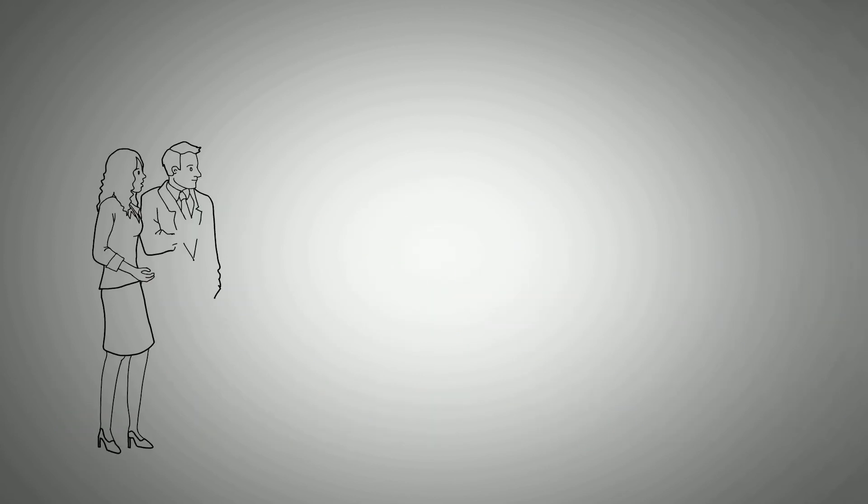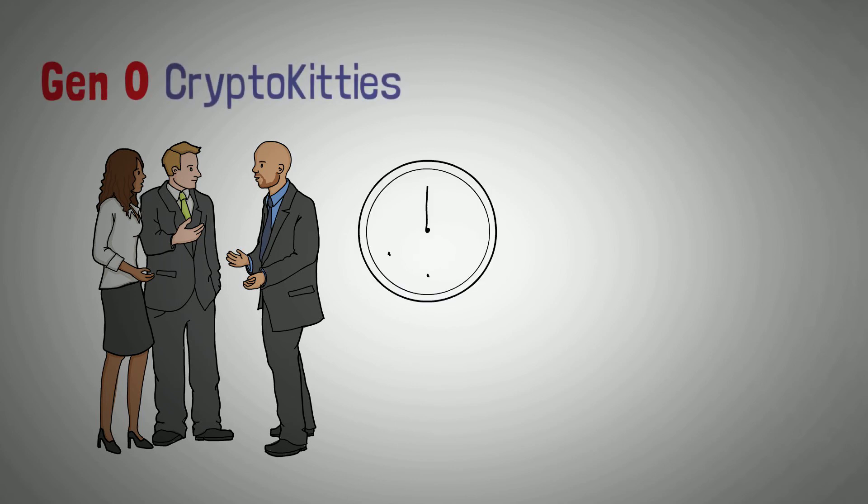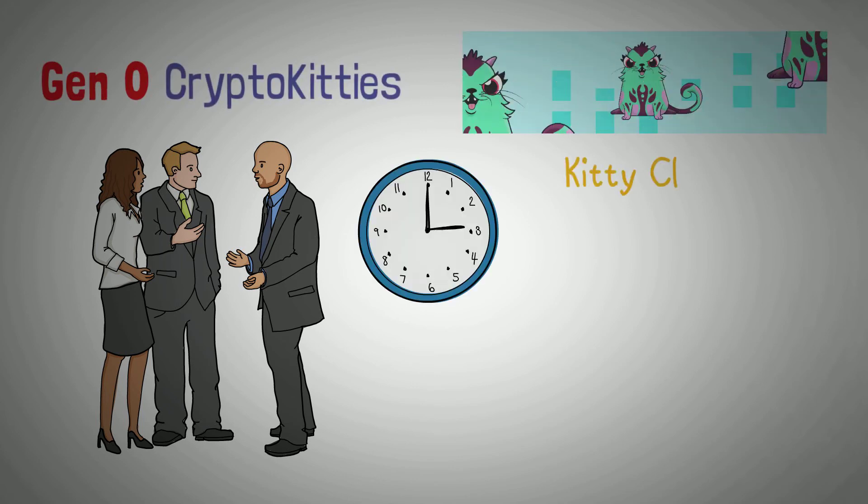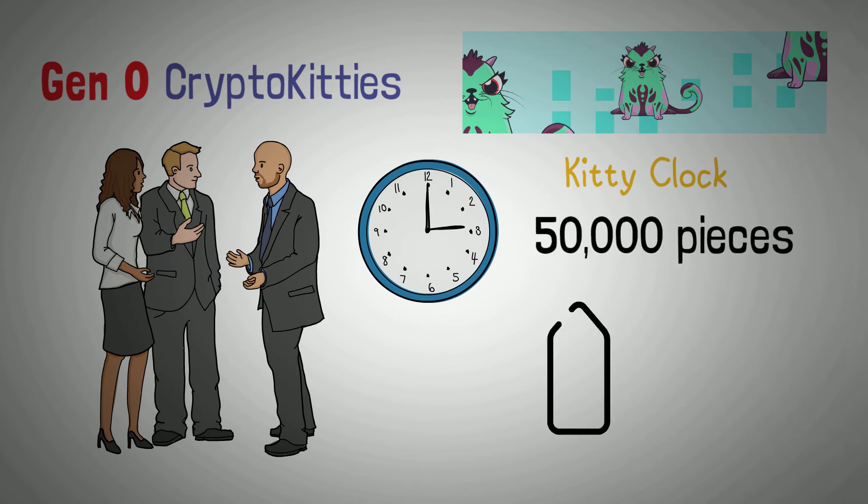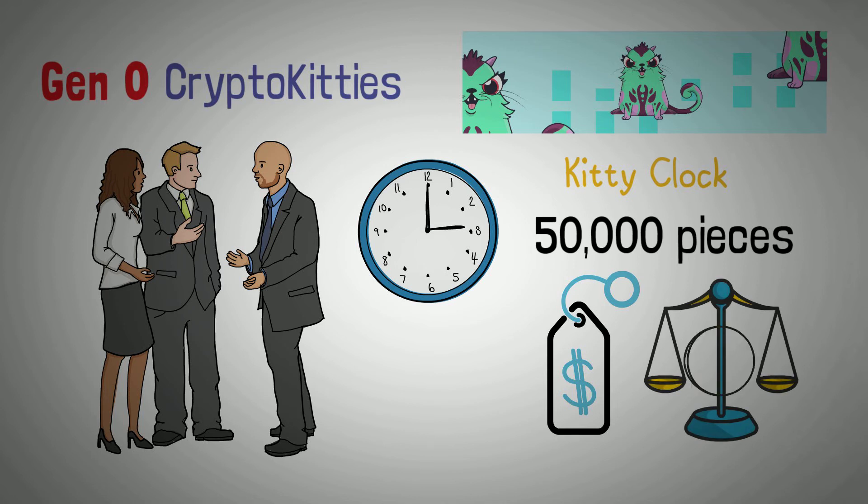However, the CryptoKitties development team releases new Gen 0 CryptoKitties every 15 minutes. These Gen 0 Kitties are born from the Kitty Clock, and they have no parents. The team created only 50,000 pieces, and their starting auction price is determined by the average price of the last 5 CryptoKitties sold from the Kitty Clock, plus 50%.